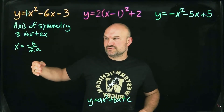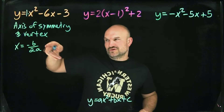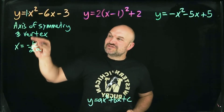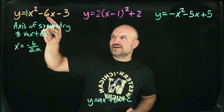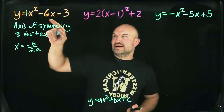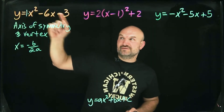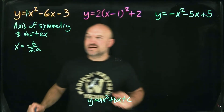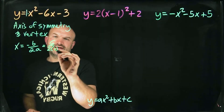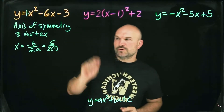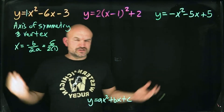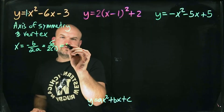A common mistake students make is when they see a negative b, they think they're already done — but the formula says the opposite of b, meaning you flip the sign. Since b is negative six, we rewrite it as positive six divided by two times one, which gives us six divided by two, which equals three.